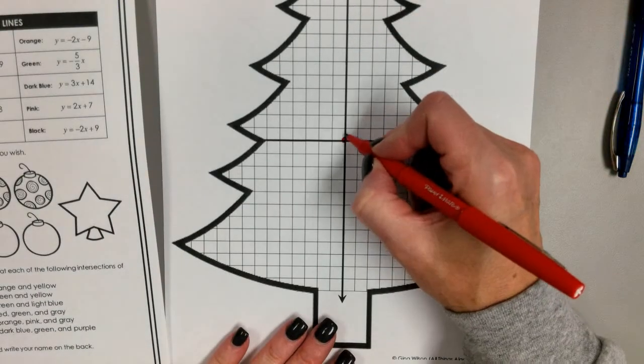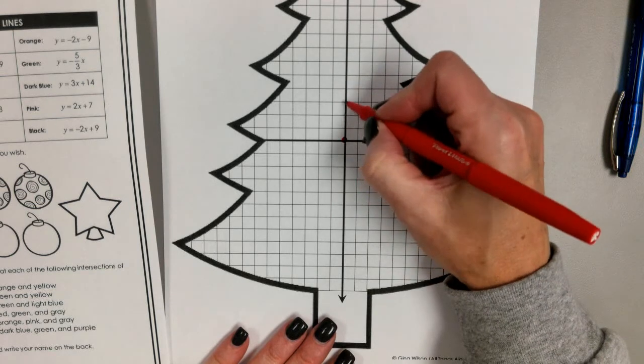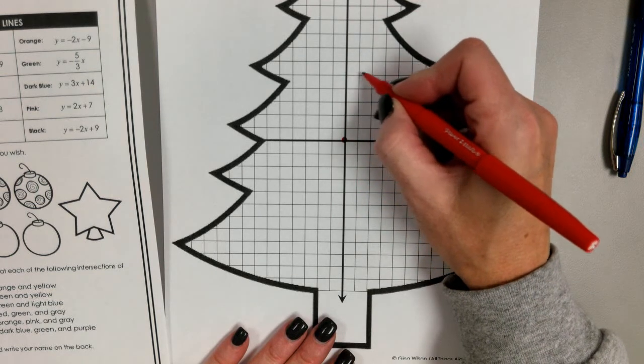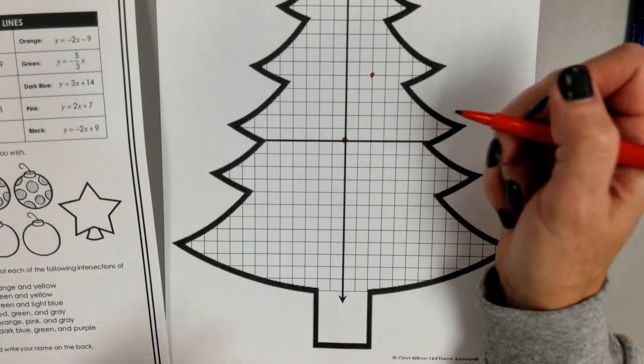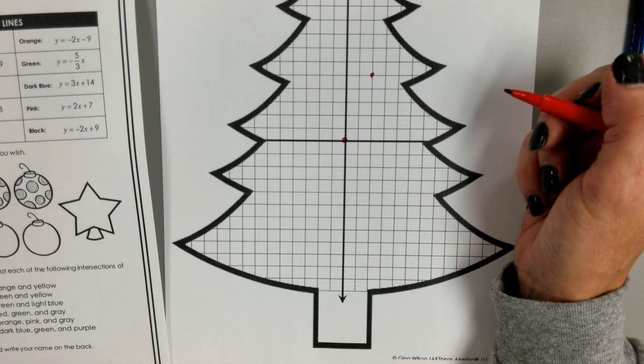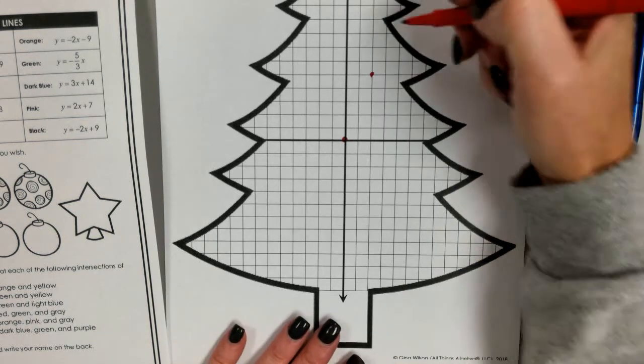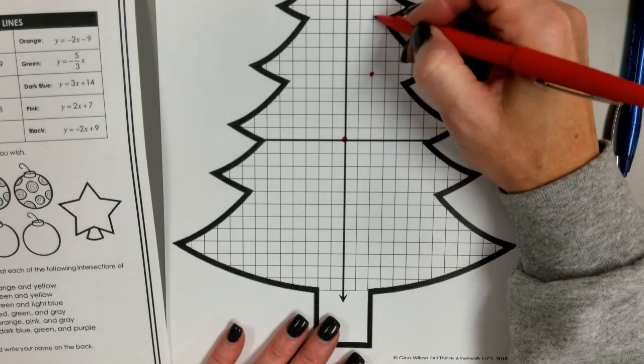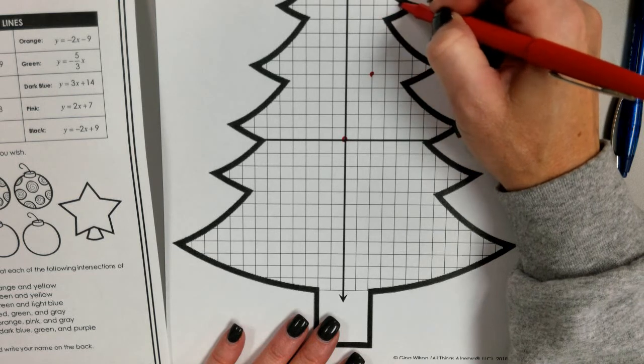So from this point I'm going up five - one, two, three, four, five - and I'm going over two. Technically two points are enough to draw a line, but we want to be as accurate as possible, so we want to get some more points. So I'm going to do it again: one, two, three, four, five, over two.